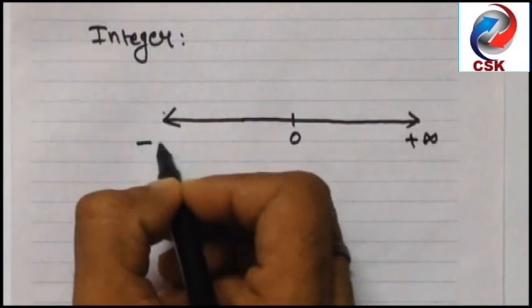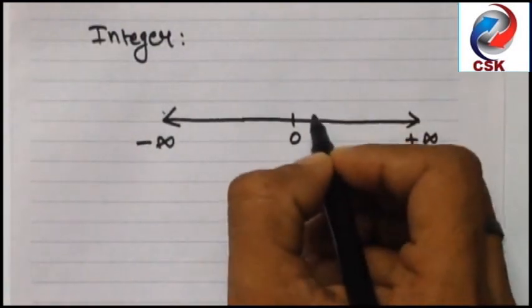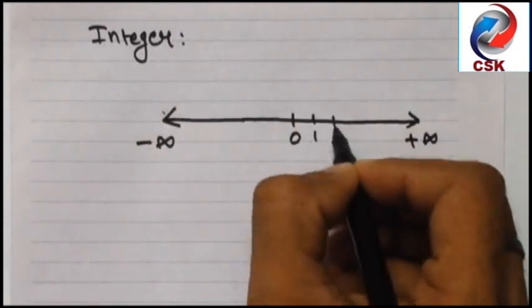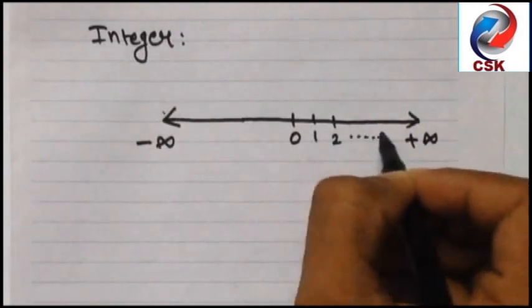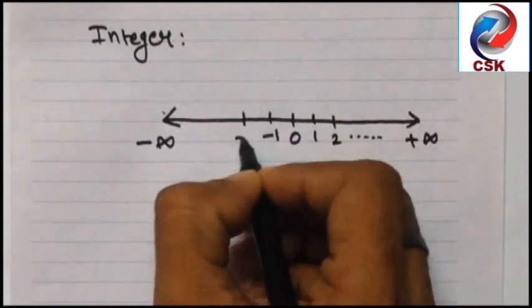So I can draw the points as 1, 2, 3, and so on. In the same way, -1, -2 can also be drawn. All my dear students, the points which we have written over here are all the integer numbers.